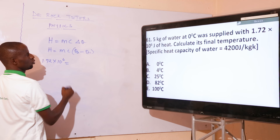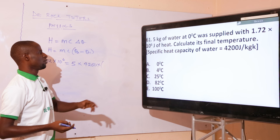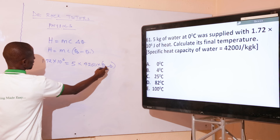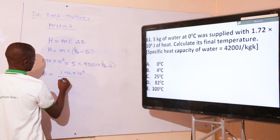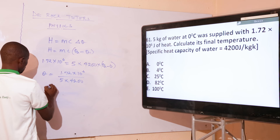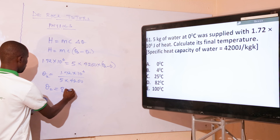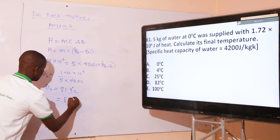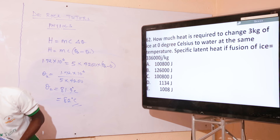From the question, the quantity of heat given is 1.72 × 10⁶ joules, the mass of water is 5 kg, and the specific heat capacity is 4200 J/kg. The initial temperature is zero, so we have θ₂ minus zero, which gives θ₂. Therefore θ₂ equals 1.72 × 10⁶ divided by (5 × 4200), giving approximately 81.9 degrees Celsius, which rounds to 82 degrees Celsius. The correct option is option D.